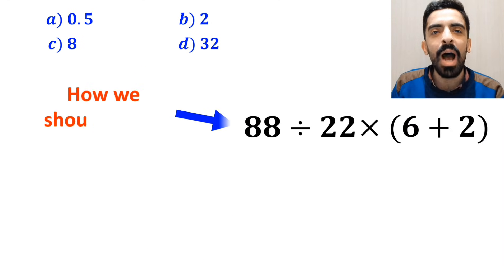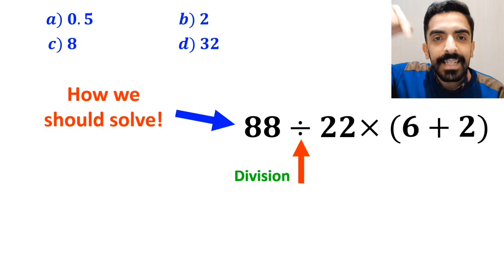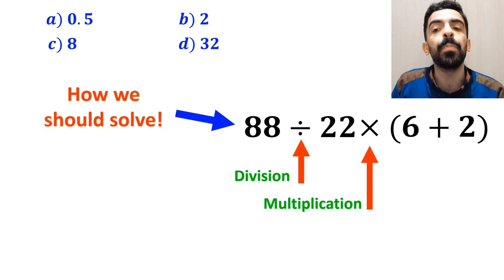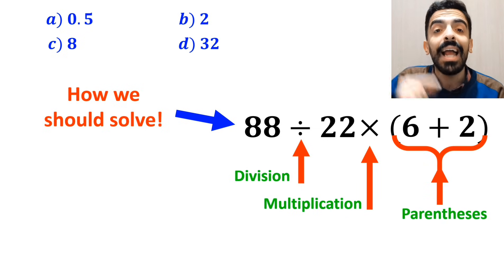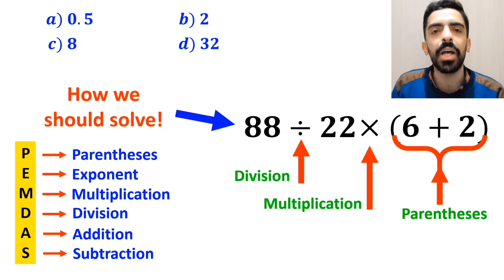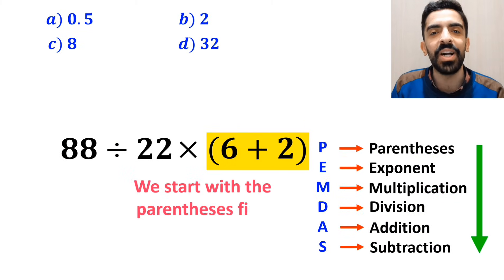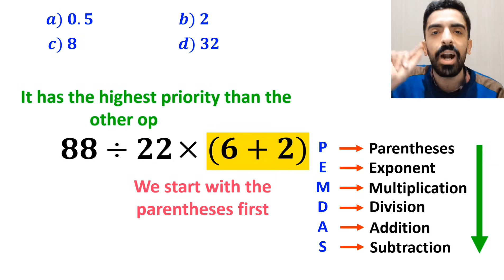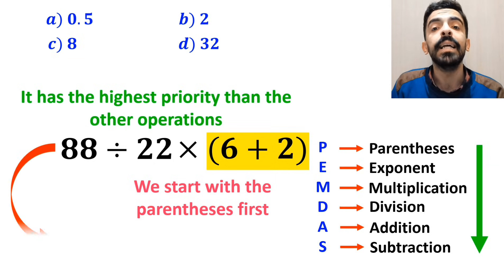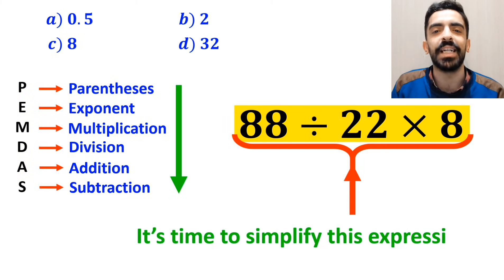Now let me show you how to solve this expression correctly. As you can see on the screen, in this expression, first we have a division sign, followed by a multiplication sign, and finally parenthesis. To solve this question, we need to use the PEMDAS rule. PEMDAS shows us the priority of the order of operations. So we'll start with the parenthesis first, because it has the highest priority. Instead of the original expression, we can write 88 divided by 22 multiplied by 8.